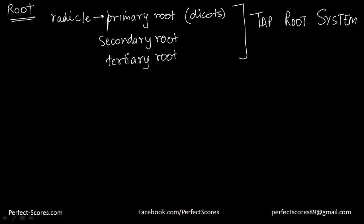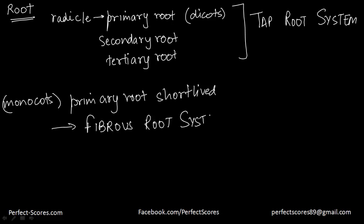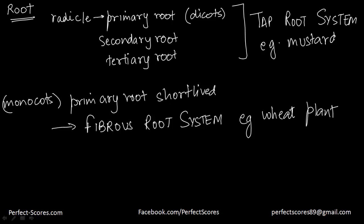That is the tap root system. In monocots, the primary root is very short-lived — it dies very soon and is replaced by a large number of roots. That gives rise to what we know as the fibrous root system. An example of this is in the wheat plant, because wheat is a monocot. An example of a tap root system would be a mustard plant, which is a dicot.